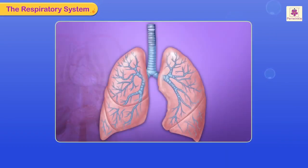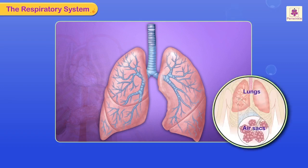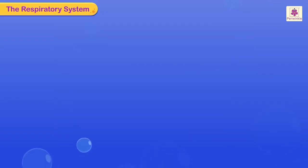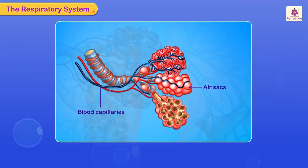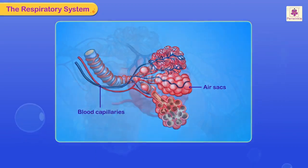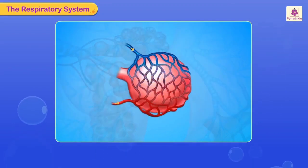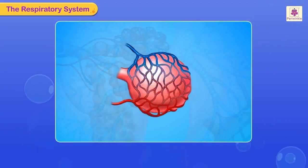Lungs are made up of thousands of air sacs which look like bunches of grapes. Each air sac is surrounded by blood capillaries. There is an exchange of gases between the air sacs and blood capillaries in the lungs.